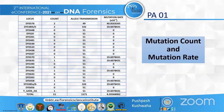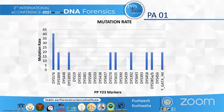This table shows the mutation rates at different markers. The maximum mutation rate was observed at DYS576, and the average mutation rate was 9.393 × 10⁻³. The same data is represented graphically here, and you can see DYS576 having the highest mutation rate in our study.